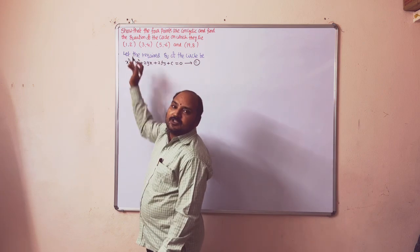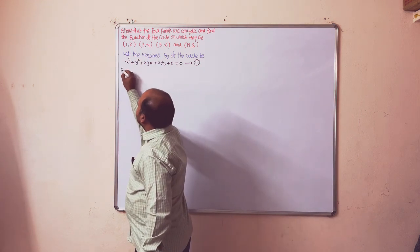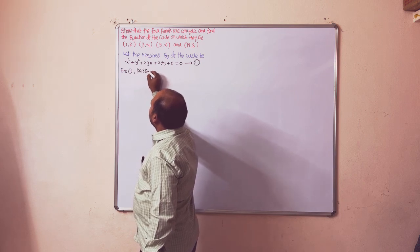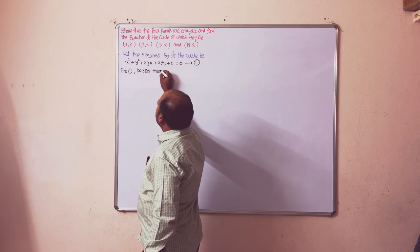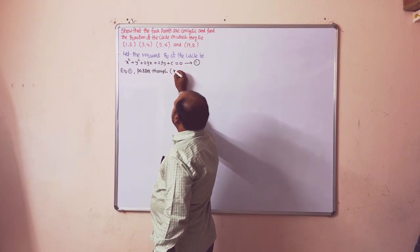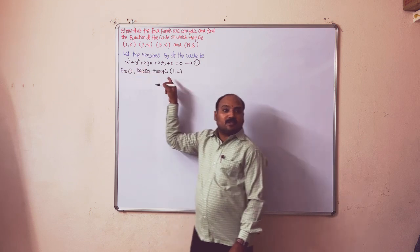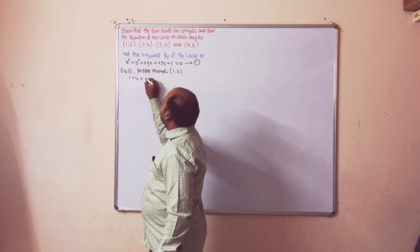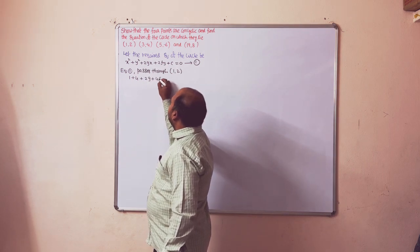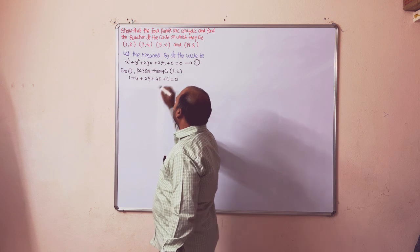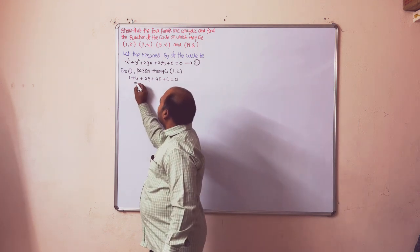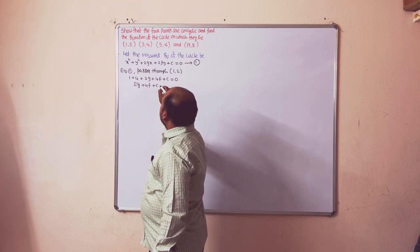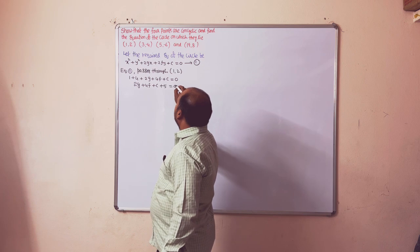Equation 1 passes through the first point (1, 2). Substituting x = 1 and y = 2, it becomes 1 + 4 + 2g + 4f + c = 0, which simplifies to 2g + 4f + c + 5 = 0. This is Equation 2.